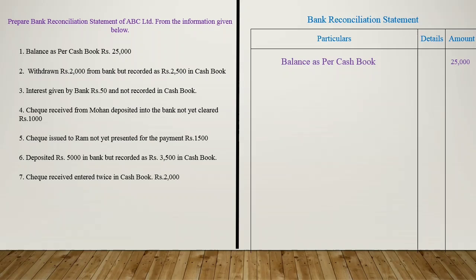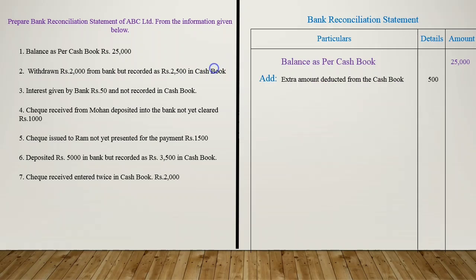The second step is to reverse entries which result in the difference between balances of Passbook and Cash Book. Our second transaction is: withdrawn Rs. 2000 from bank, but recorded as Rs. 2500 in Cash Book. That means we recorded Rs. 500 extra in Cash Book, resulting in a lower balance of Cash Book compared to Passbook. Since we have deducted Rs. 500 extra from the Cash Book, to reverse the entry we will add this Rs. 500. Therefore, add extra amount deducted from Cash Book: Rs. 500.